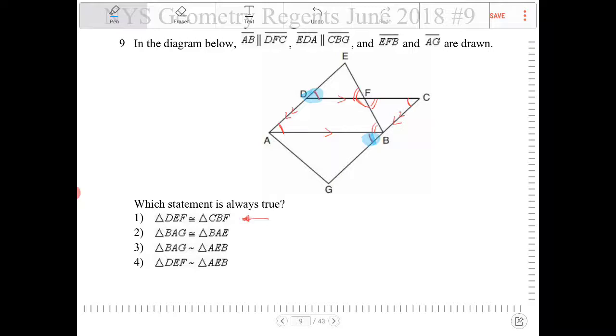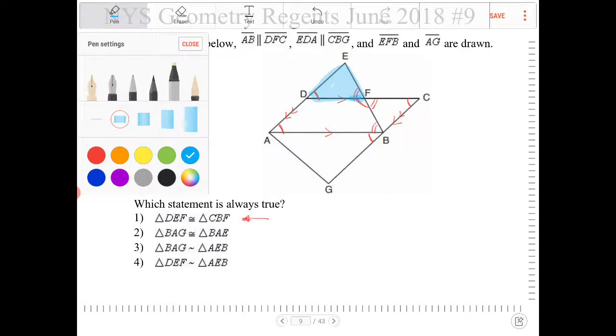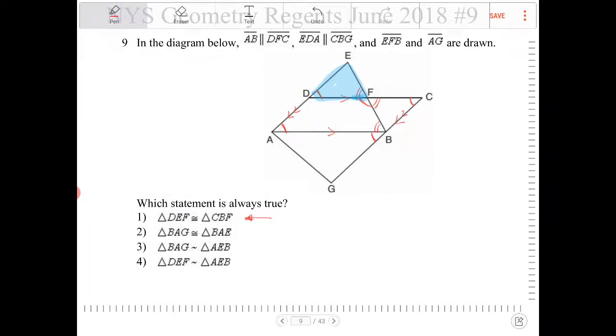What about DEF similar to AEB? DEF, this triangle here, and triangle AEB, which I'm going to use red. This I can certainly agree with because if you look at this, the triangle in blue, angle D and angle F correspond with angle A and angle B in triangle AEB. So this certainly works. Option four is the answer. Those two triangles are similar because of angle-angle theorem.